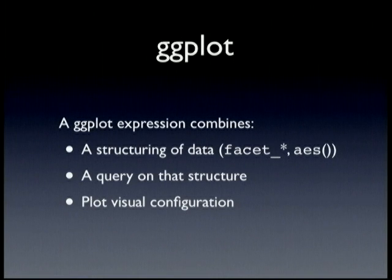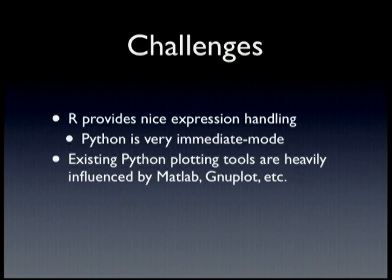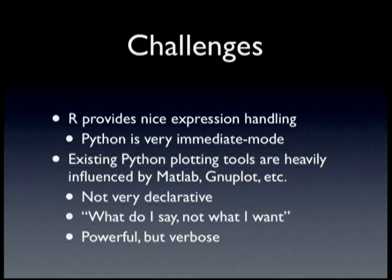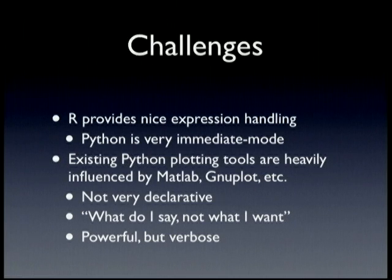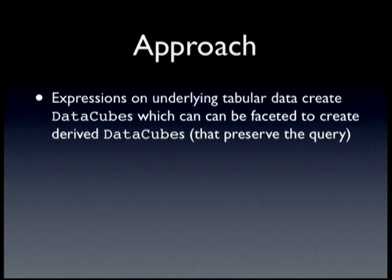I don't get envious very often, but I do get a little envious that they can just have these expressions and really nicely play with them. Adapting these two things together requires us to essentially build something that looks like a compiler — you're building an expression graph, walking the graph, and building some other stuff that evaluates and runs. The approach I took was to build actual expression objects which basically do deferred slicing, deferred roll-ups, or deferred faceting on data cubes. When you call additional facet methods on them, they return additional deferred data cubes.